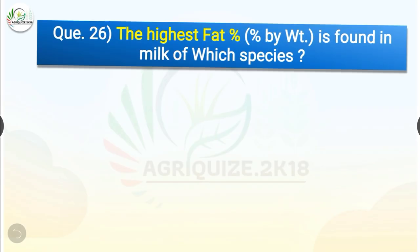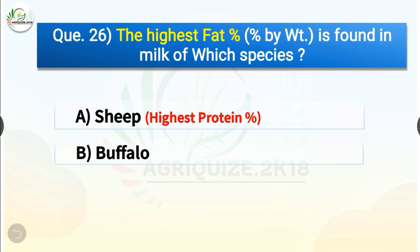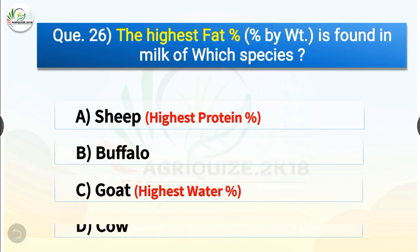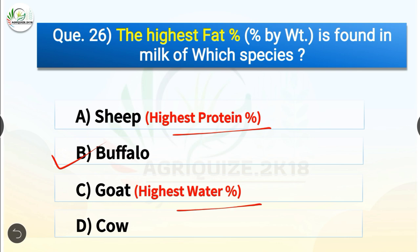Question number 26. The highest fat percentage is found in the milk of which species? The options are sheep, buffalo, goat or cow. The correct answer is option B, buffalo. So the highest fat percentage is found in the milk of buffalo. Whereas highest protein percentage is found in sheep, and highest water percentage is found in goat.